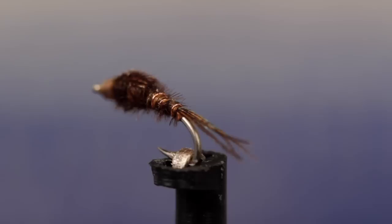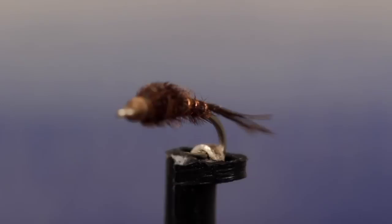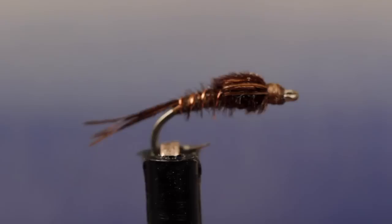I wish trout didn't like these little things as much as they do. My aging eyes are much better suited to size 16 and above, particularly in low-light conditions. But I've found going small is at times the only way out of a thorough skunking.